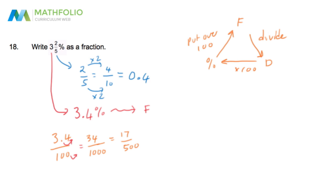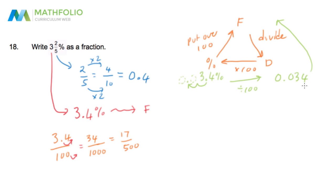Simplifying 34 over 1000 by dividing by 2 twice gives 17 over 500. Alternatively, from 3.4 percent we can divide by 100 to get the decimal 0.034. The last digit is in the thousandths place, so the denominator is 1000 and the numerator is 34, giving 34 over 1000, which simplifies the same way to 17 over 500. Our final answer is 17 over 500.